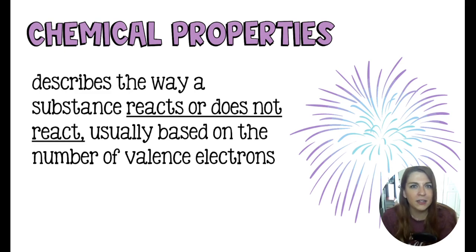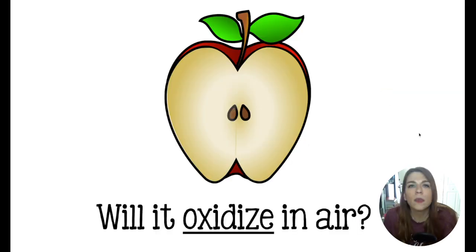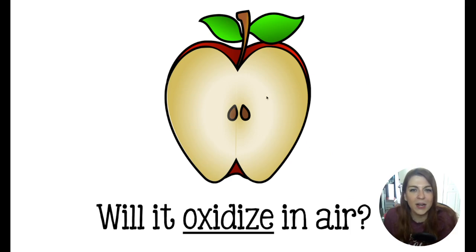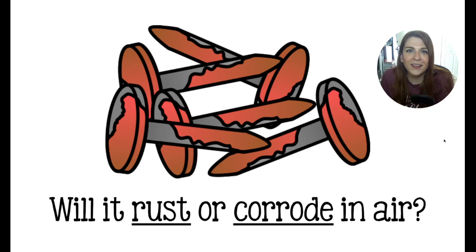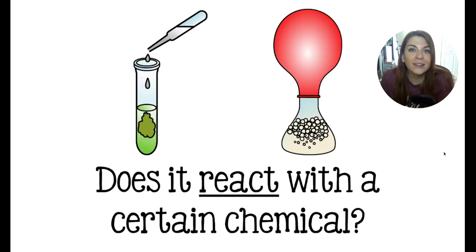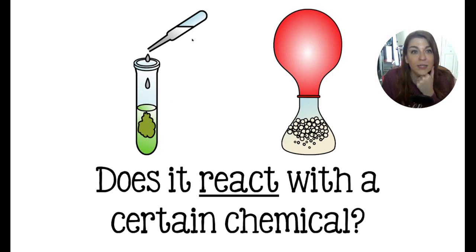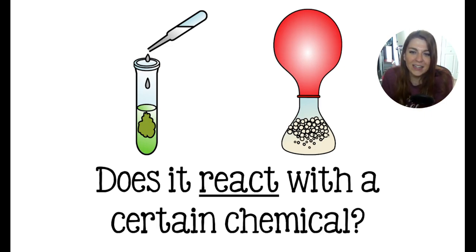A chemical property is kind of like the personality of an element or compound. When it comes to chemical properties, we ask ourselves questions like: will this substance oxidize in air — like this apple turning brown once it's exposed to oxygen? Does it rust or corrode when in contact with air? Is that substance flammable? Does it react with other chemicals? Here we have the formation of a precipitate — you mix two solutions together, they react and form a solid. Here, this is probably vinegar and baking soda, and that is going to generate a gas that fills the balloon. Sometimes things react and other times they don't — like baking soda in your kitchen doesn't react all that much with the air, but it will react with vinegar.